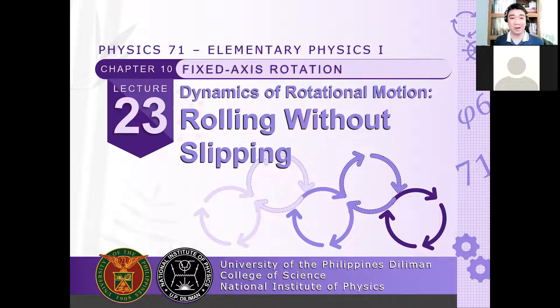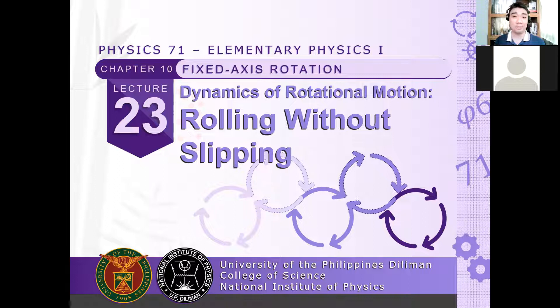Last time we discussed fixed axis rotation, where we introduced the notion of solving problems in rigid body dynamics. Aldon discussed the different approaches: if you want to determine angular acceleration or linear acceleration, you use Newton's second law or Newton's second law for rotation. Otherwise, if you're looking for velocities, angular velocities, or distances, it's better to use energy approaches like conservation of mechanical energy.